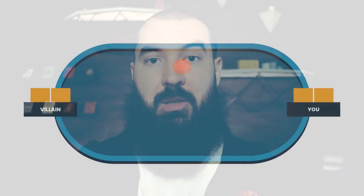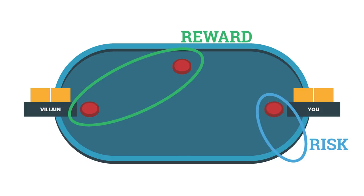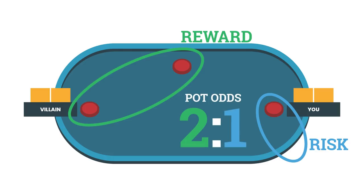Take a very simple example: say there's one chip in the middle and your opponent bets one chip. In order to continue, you're calling one chip. What are you risking that for? You're risking it for the original one chip pot plus your opponent's one chip bet. So you're risking one unit to win two units, which means you're getting two to one pot odds.